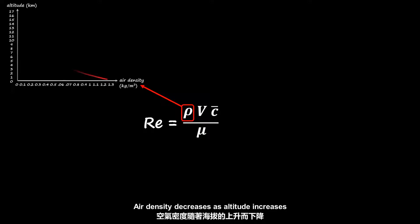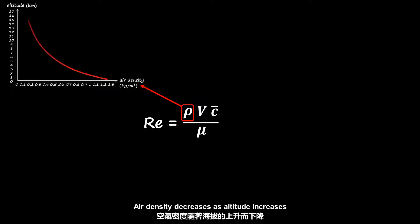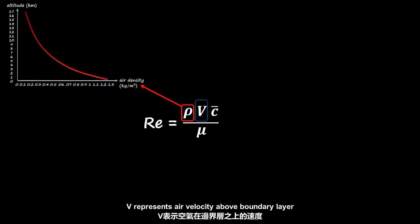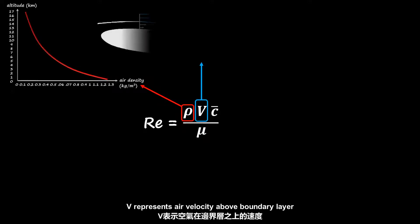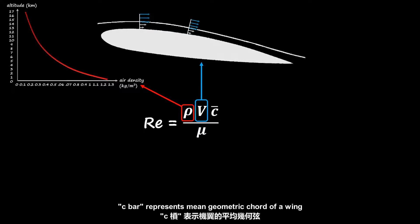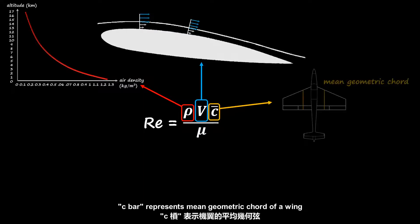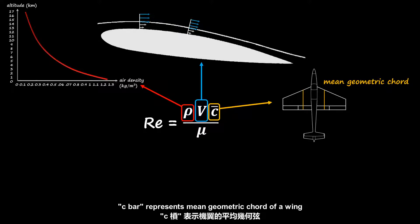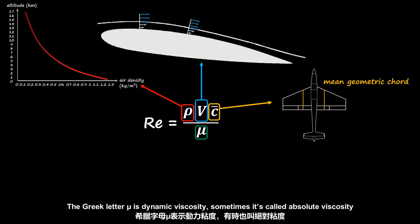Air density decreases as altitude increases. V represents air velocity above the boundary layer. C-bar represents the mean geometric chord of a wing. The Greek letter mu is dynamic viscosity, sometimes called absolute viscosity.